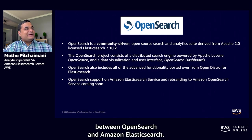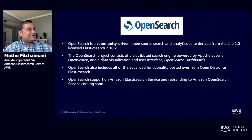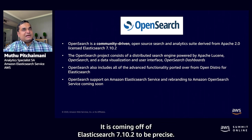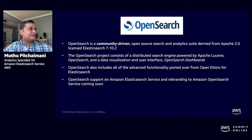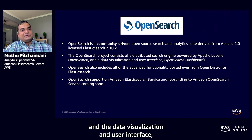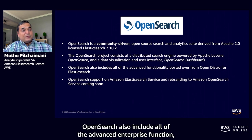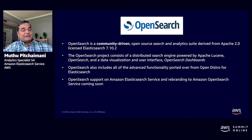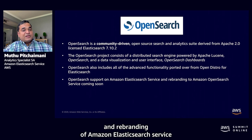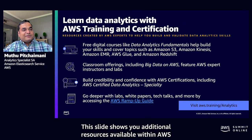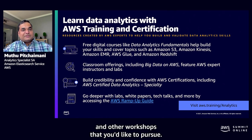Now let's discuss the relationship between OpenSearch and Amazon Elasticsearch. OpenSearch is a community-driven search and analytics suite derived from the Apache 2.0 licensed Elasticsearch 7.10.2. The OpenSearch project consists of a distributed search engine powered by Apache Lucene called OpenSearch, and the data visualization interface formerly known as Kibana, which will be called OpenSearch Dashboard. OpenSearch also includes all advanced enterprise functions ported over from Open Distro for Elasticsearch. OpenSearch support on Amazon Elasticsearch Service and rebranding of the service to Amazon OpenSearch Service is coming soon. Additional resources are available within AWS Training and Certification and other workshops.